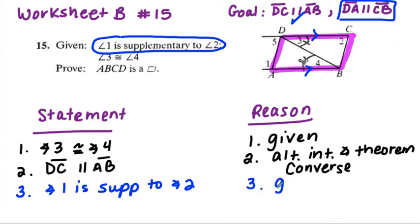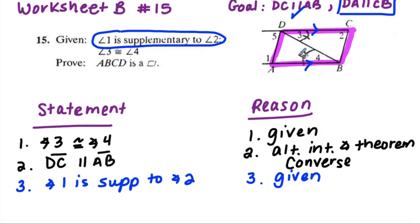When I see that something is supplementary, I try to see if I can figure out a way to use the congruent supplements theorem, because that's one thing we tend to forget about and it's a really helpful theorem. Well, if DC and AB are parallel, that actually tells me that 1 and 5 are supplementary. So if 1 and 5 are supplementary and 1 and 2 are supplementary, that means that 5 is equal to 2 by the congruent supplements theorem.